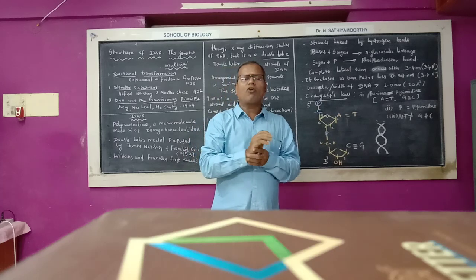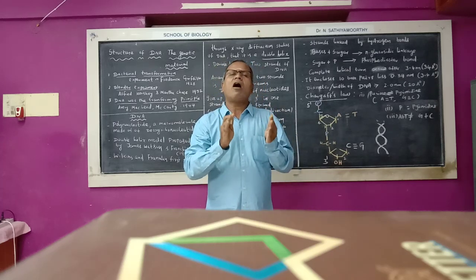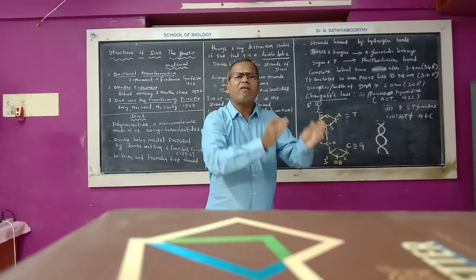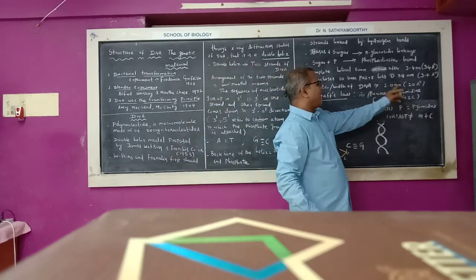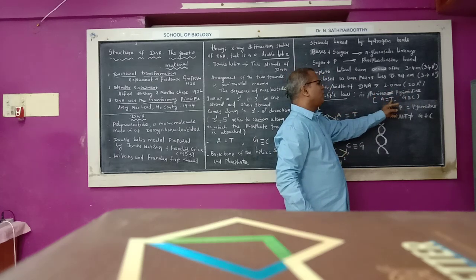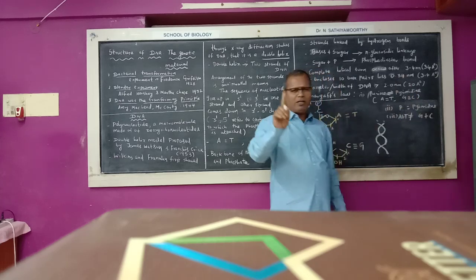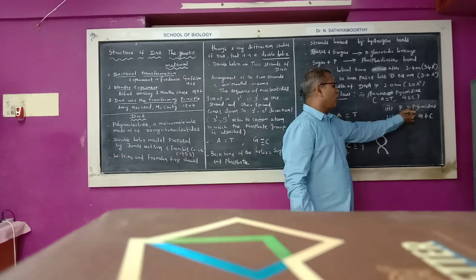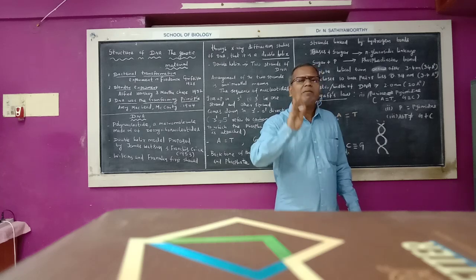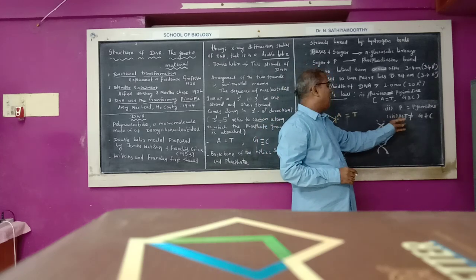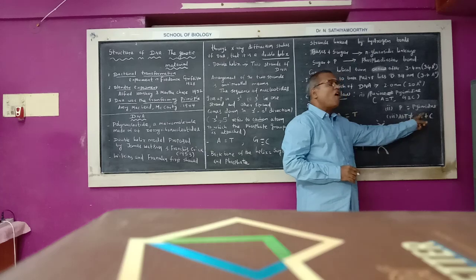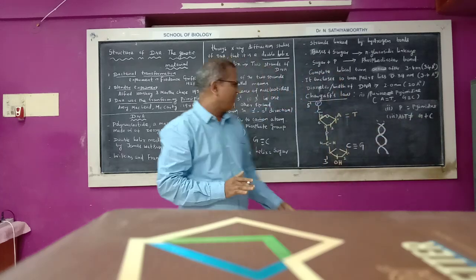Chargaff's laws: Law 1 — purines always pair with pyrimidines and pyrimidines always pair with purines; the amount of purine equals the amount of pyrimidine. Law 2 — the number of purine bases is always equal to the number of pyrimidine bases. Law 3 — A plus T is always not equal to G plus C.